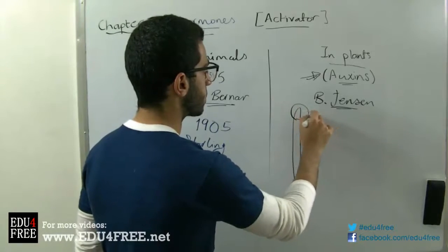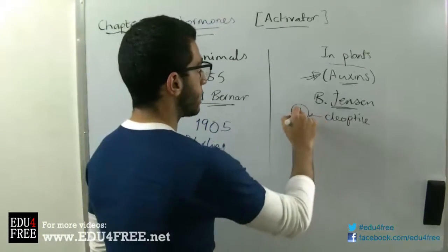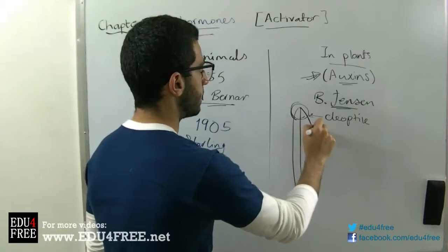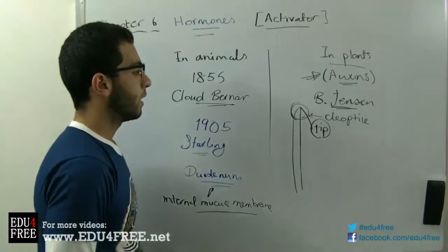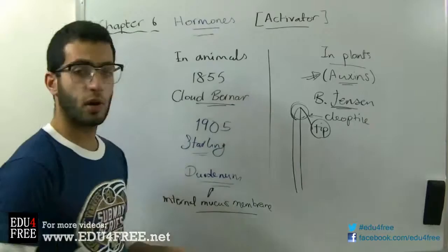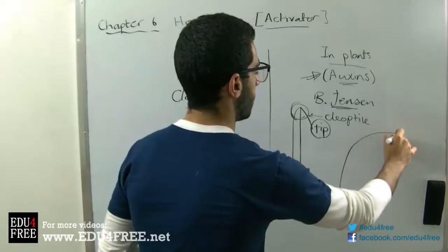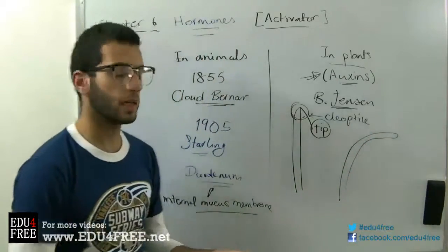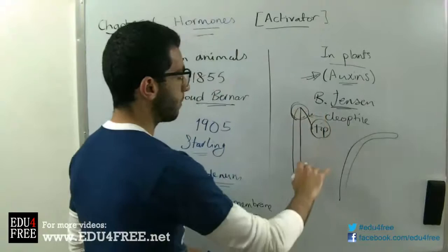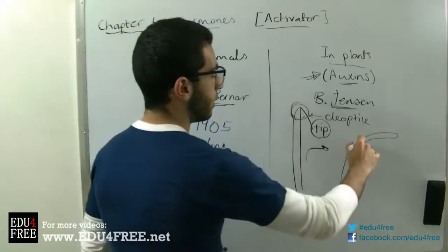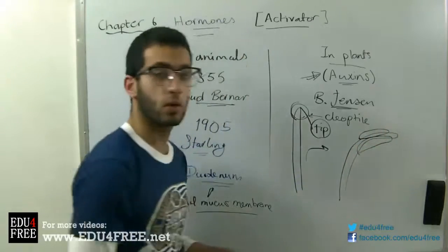There is a part called the coleoptile — this is the stem. At the tip, the auxins are produced. Auxins have a very important role in the shape of growth in plants because they cause a curvature in plant growth according to different factors like gravity and light. If the plant needs to curve in one direction, auxins decrease the growth on that side and increase the growth on the other side, so curvature occurs.